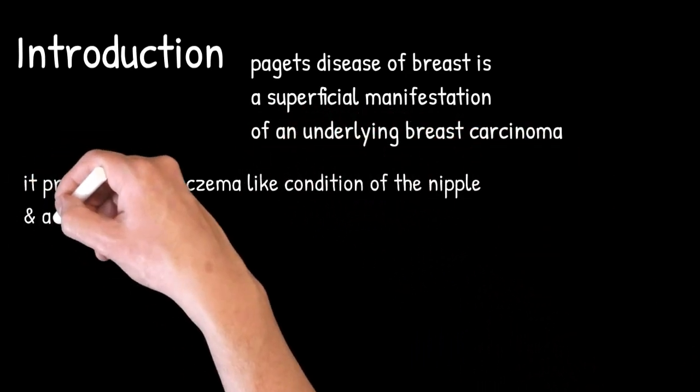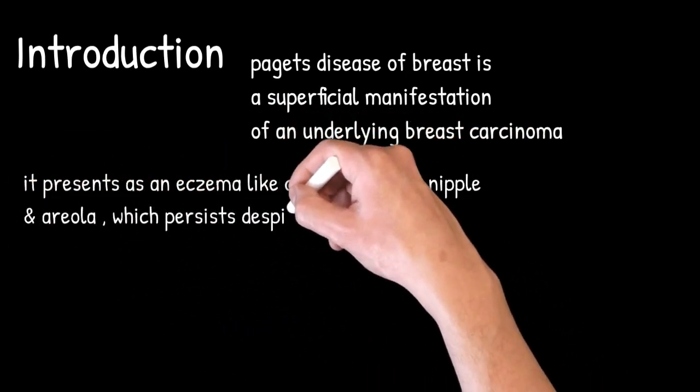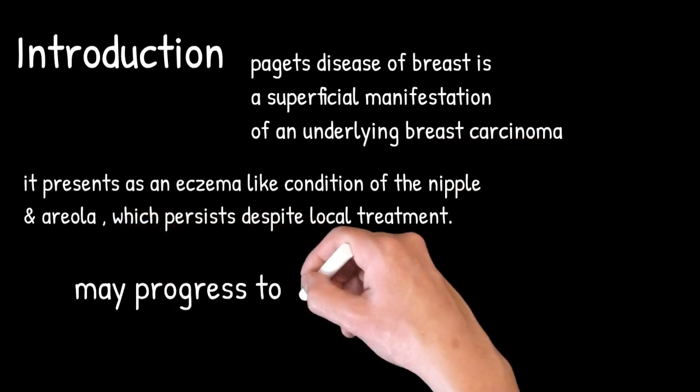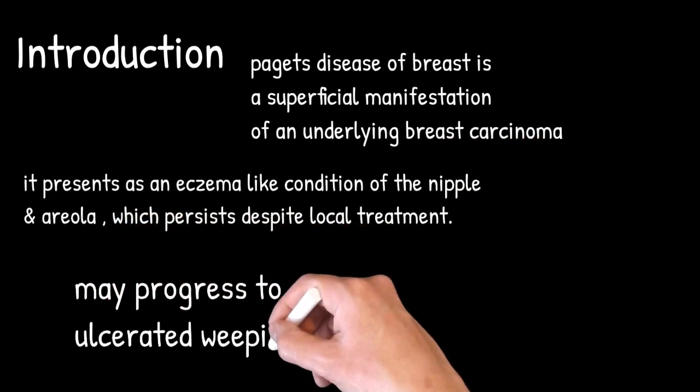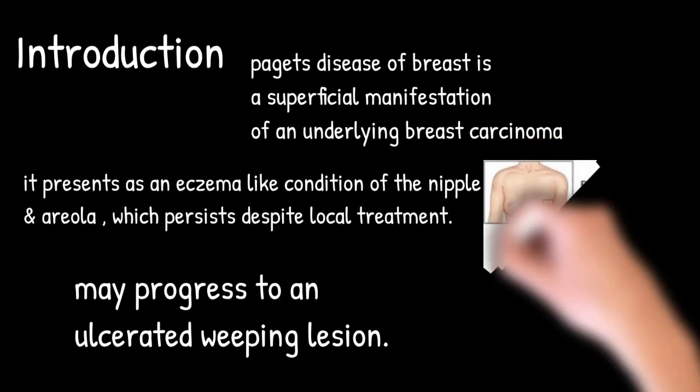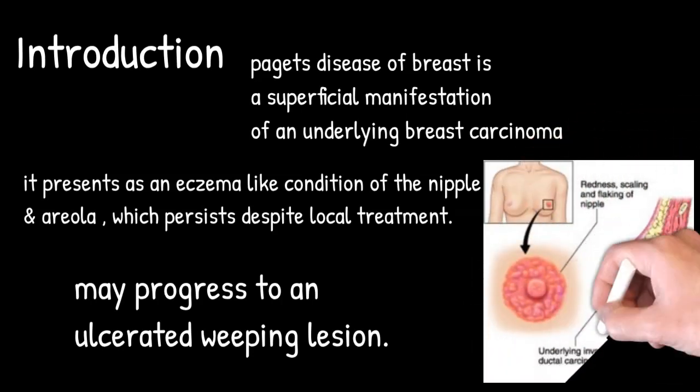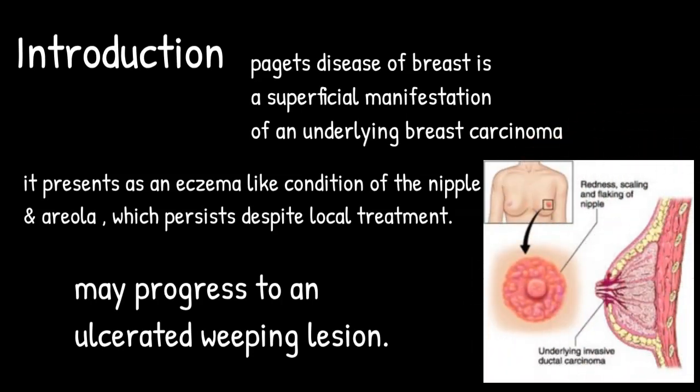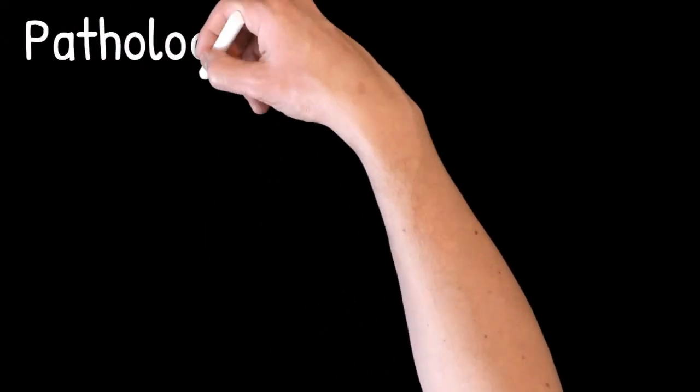It presents as an eczema-like condition of nipple and areola which persists despite local treatment. It may progress to an ulcerated weeping lesion. Redness, scaling, and flaking of nipple suggest underlying breast carcinoma in some cases of Paget's disease.